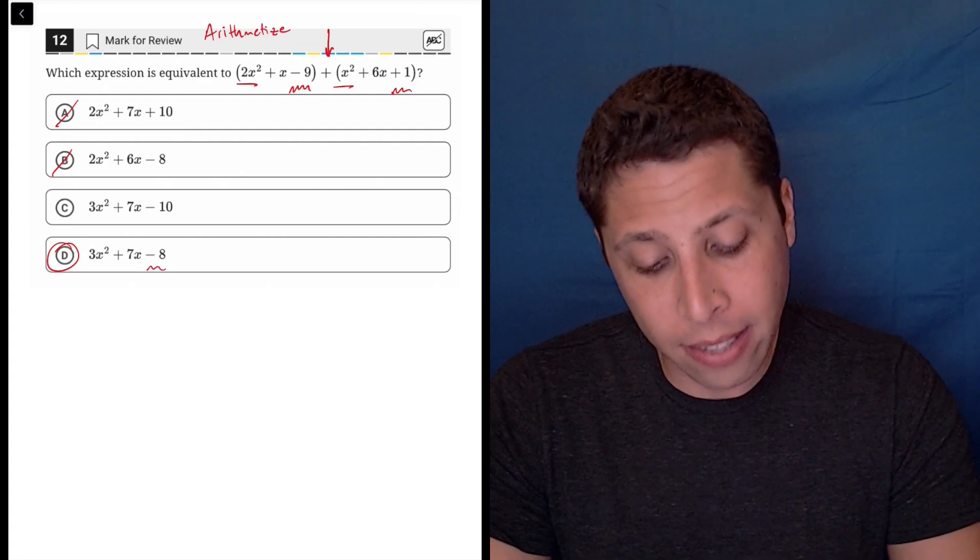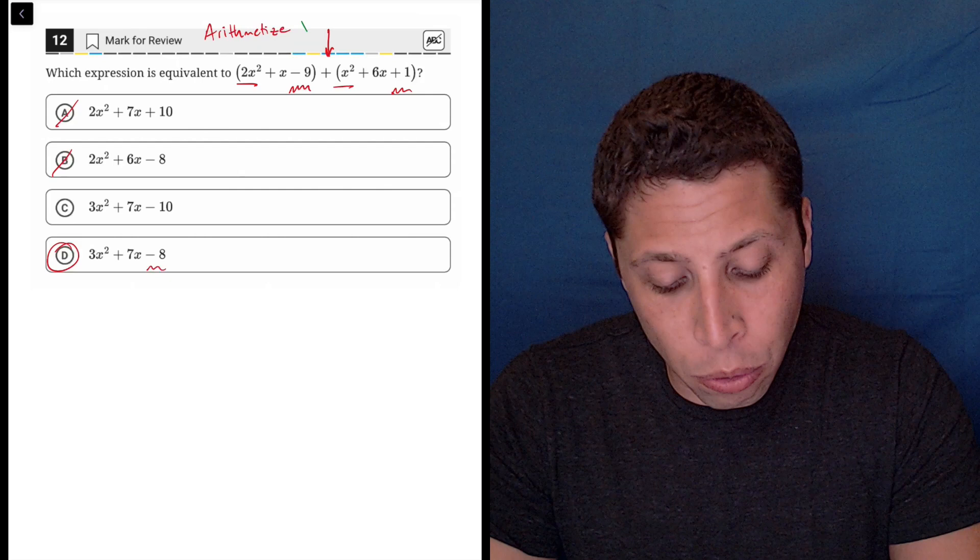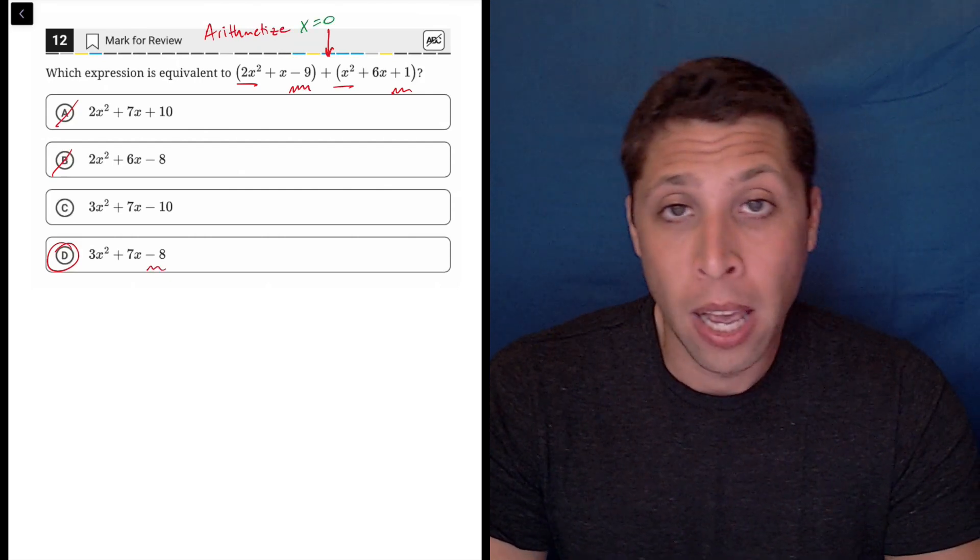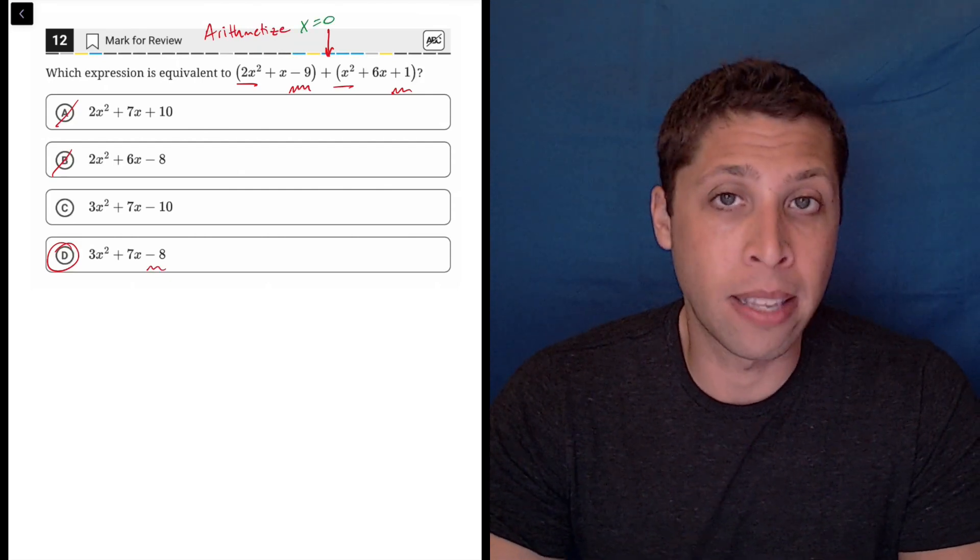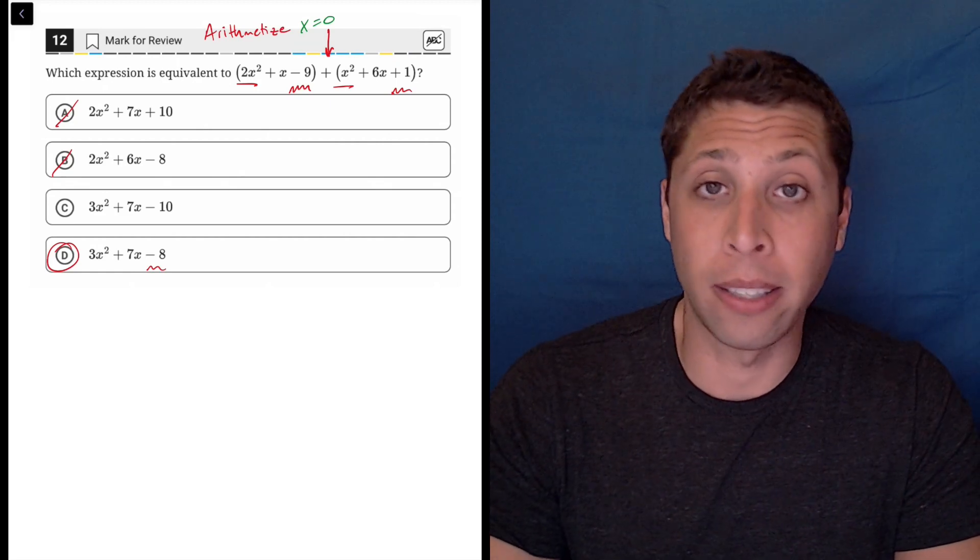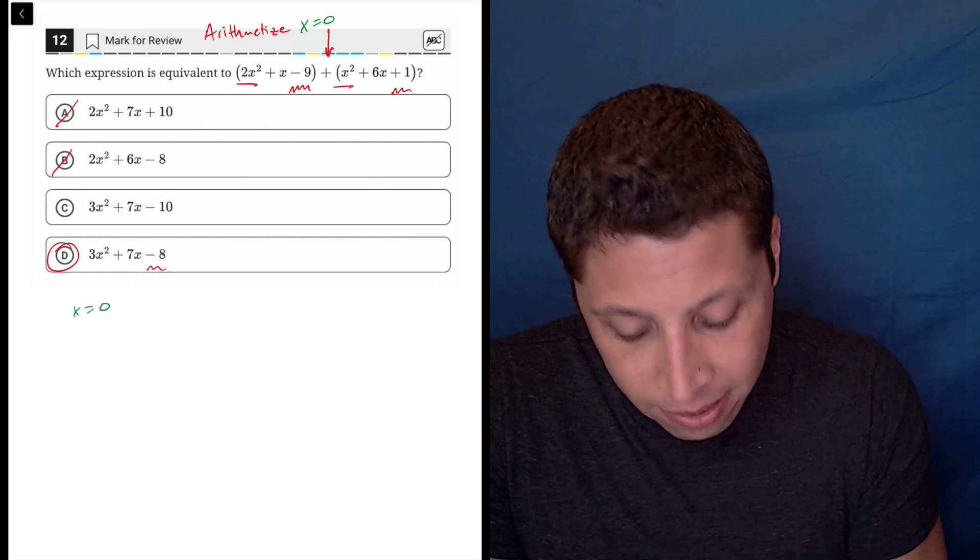If you wanted to arithmetize, like I said, we could pick a number. What I would do is I would start with x equals 0. It's very easy because it means that anything that has an x is just going to basically disappear. So what we're going to end up with is if x is 0,